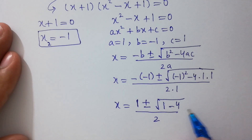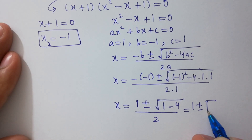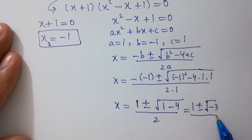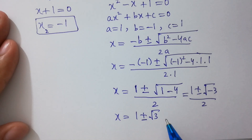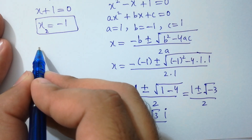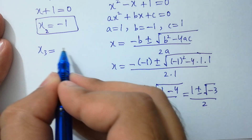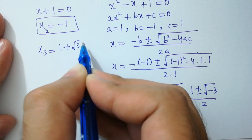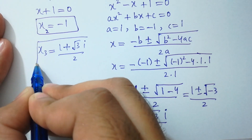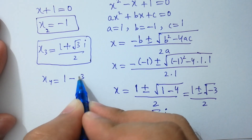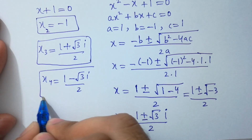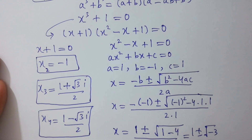This simplifies to x equals 1 plus or minus square root of minus 3 over 2. Since square root of minus 3 equals i times square root of 3, we get x₃ equals (1 plus i√3) over 2 and x₄ equals (1 minus i√3) over 2. So the equation has 4 solutions in total.